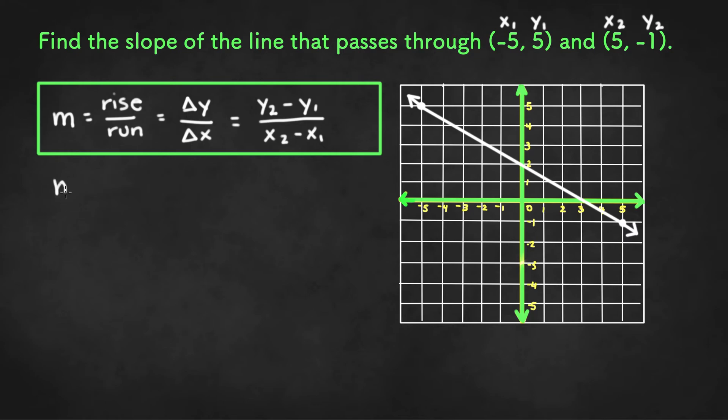We can plug it in. So we get m equals y2 minus y1 or negative 1 minus 5 over x2 minus x1 or 5 minus negative 5.